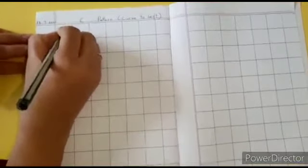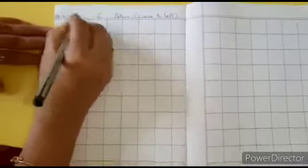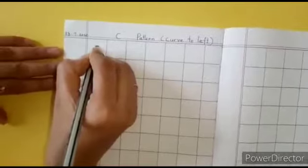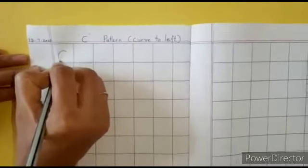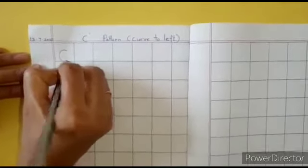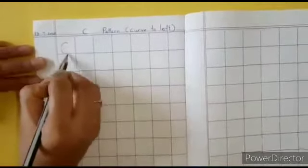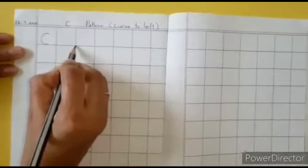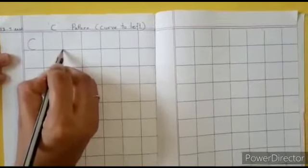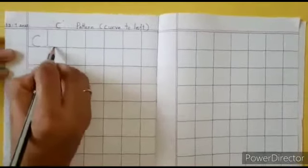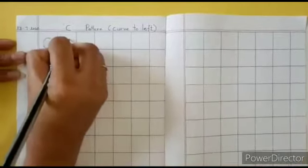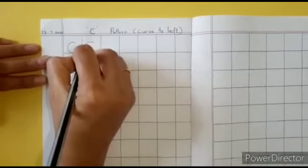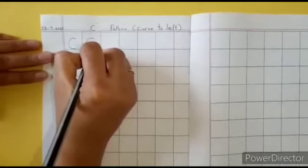Keep your pencil at the center of the square. Give a curve to the left side and come down. Touch the bottom line and complete the curve. This is called the bottom line. Every time we write a pattern, number, or letter, we have to touch the bottom line. Keep your pencil at the center, write a curve to the left, come down and touch the bottom line.